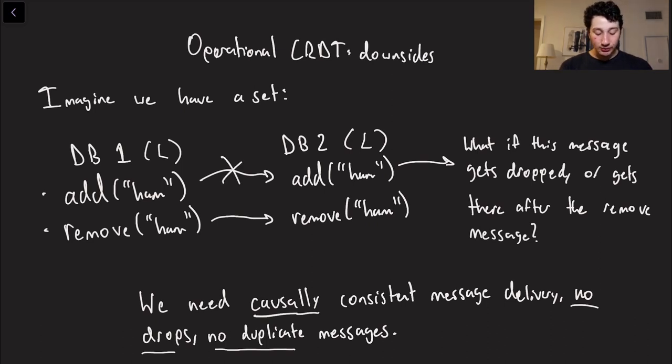But what if I were to X this out right here? And in turn, we never add ham. So database 2 only gets that we're removing ham. Now it tries to remove ham from a set that doesn't have ham in it, and we've got a problem. It's going to throw some sort of error. And obviously, that's not acceptable.